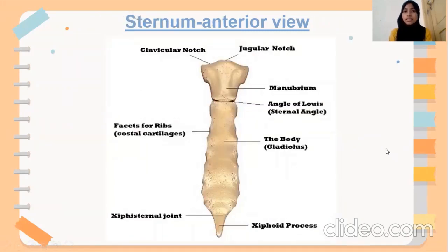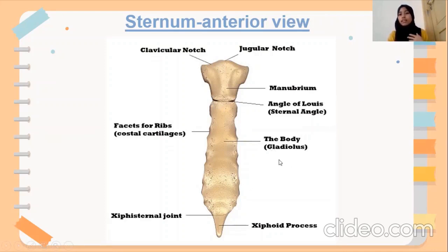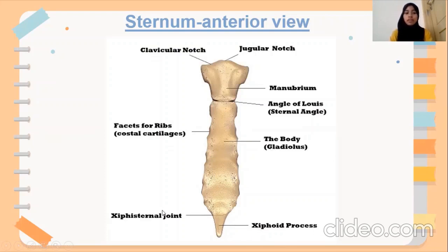We can see this is a sternum — an anterior view of the sternum. We can see here the jugular notch, the clavicular notch, the manubrium, the sternal angle, and the body. The body also has a gladiolus. At the end of this structure, you can see the xiphoid process and the xiphisternal joint.